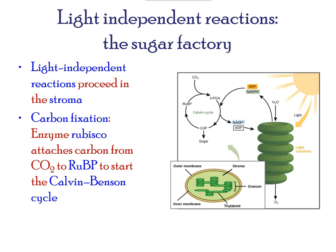In the second stage of photosynthesis, called the light-independent reaction, we see another cyclic process. During this cycle, an enzyme called Rubisco attaches carbon from carbon dioxide to form a glucose molecule. There is a lot of rearrangement of the molecule to eventually form the sugar molecule.